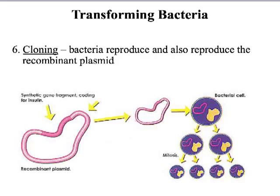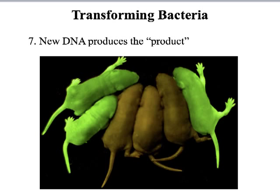The next step in transforming our bacteria is cloning — we just reproduce that bacteria. Every time we reproduce that bacteria, it reproduces everything that's in it, including the plasmid that we just made. So when it reproduces that plasmid, whatever special DNA we put inside gets reproduced over and over again. Our last step is we get DNA that produces the product — in our example, the product was insulin.